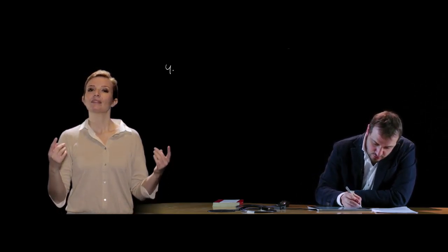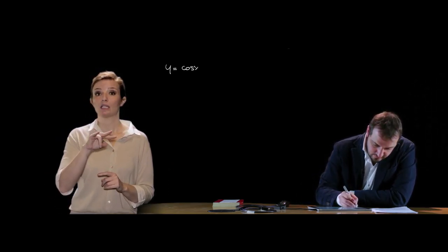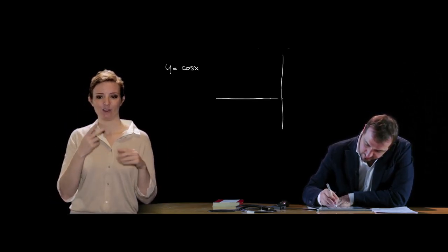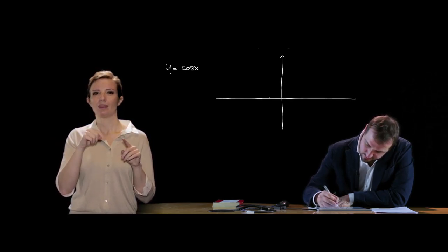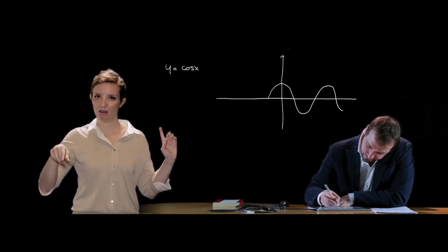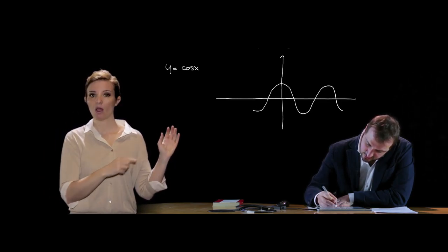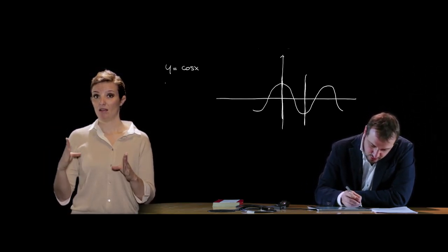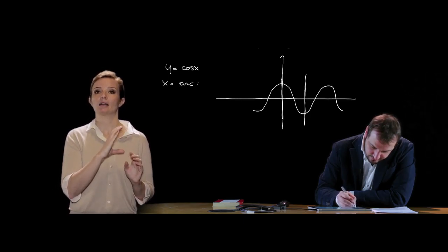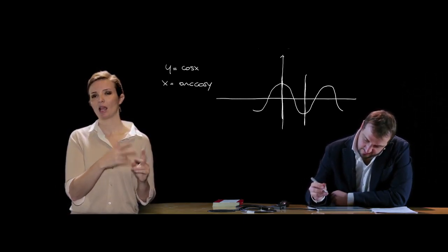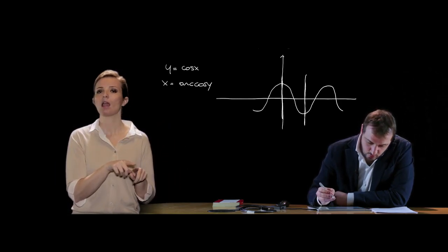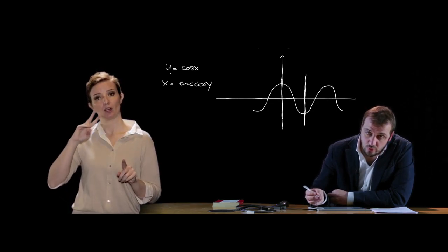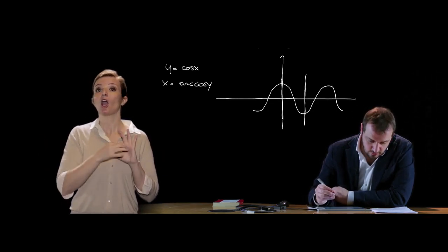Per quanto riguarda la funzione cosinusoide, la limitazione si effettua nell'intervallo [0, π]. In questo intervallo si definisce la funzione arco coseno di y, caratterizzata da un dominio compreso tra −1 e 1 e un codominio compreso tra 0 e π.